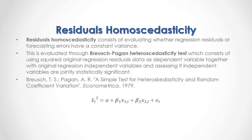As a formula, we have that current period original regression forecasting errors or residuals to the power of 2 are equal to an alpha intercept, plus — here we have the example of a regression with two independent variables — beta 1 coefficient multiplied by x1 independent variable at time t, plus beta 2 coefficient multiplied by x2 independent variable at time t, plus this regression's forecasting errors or residuals.